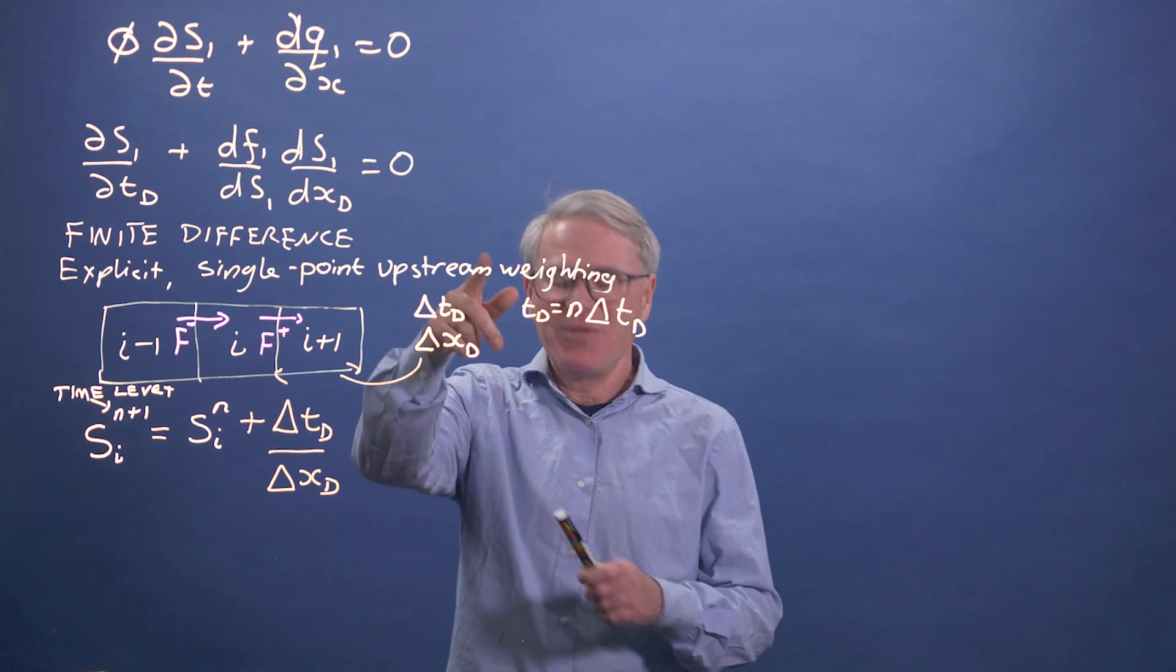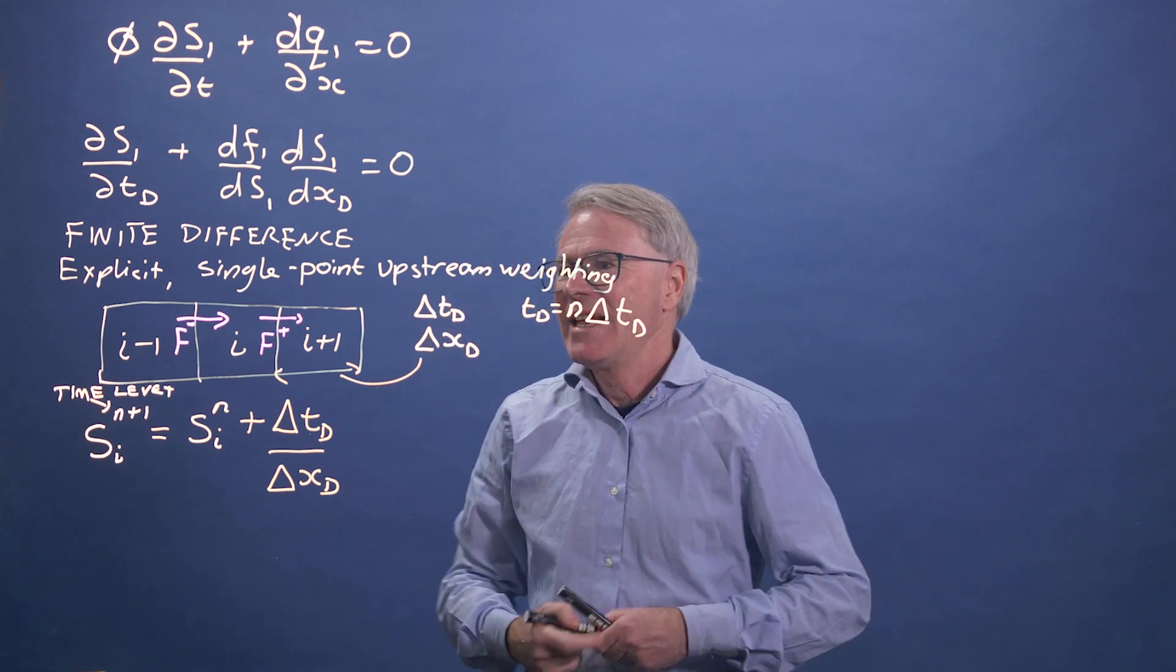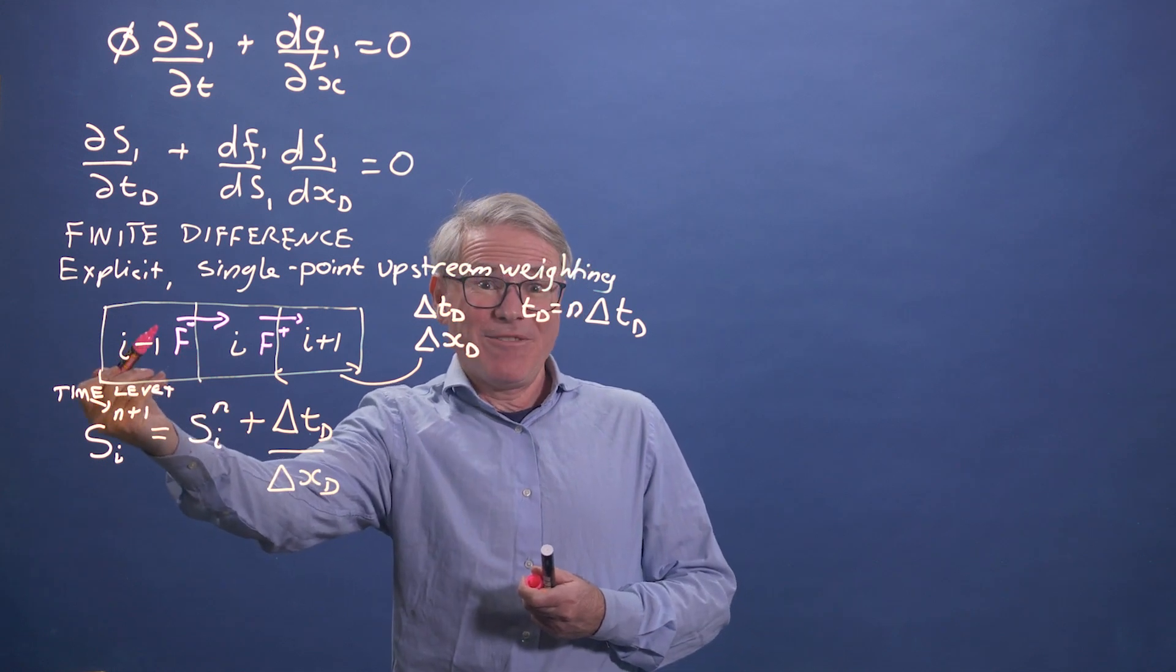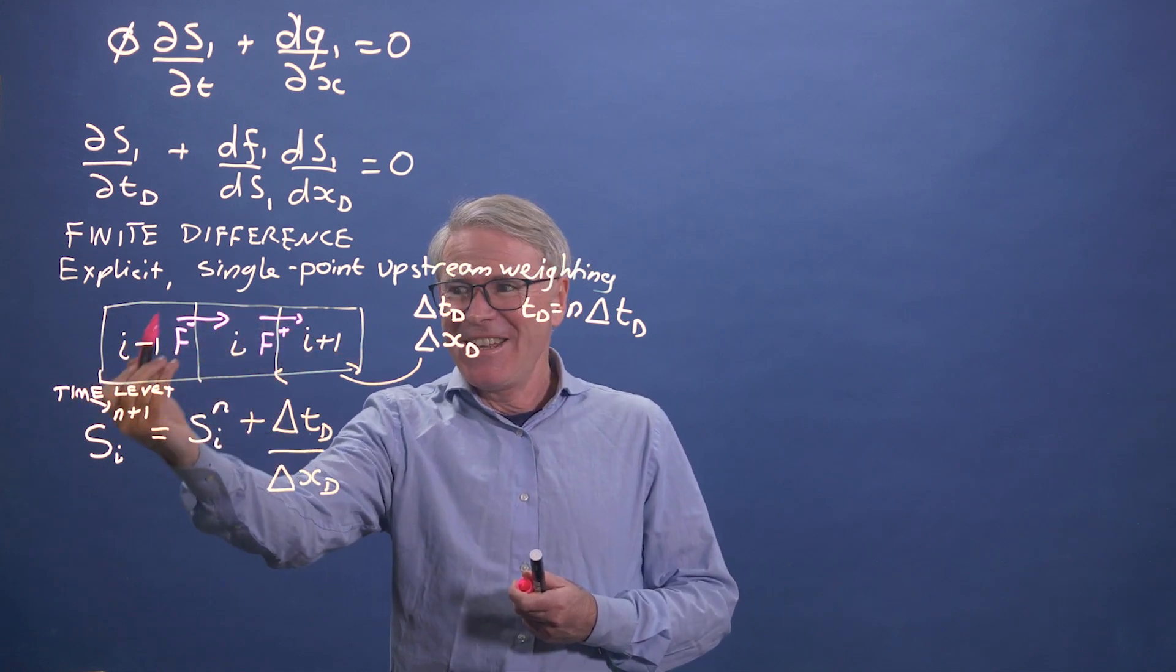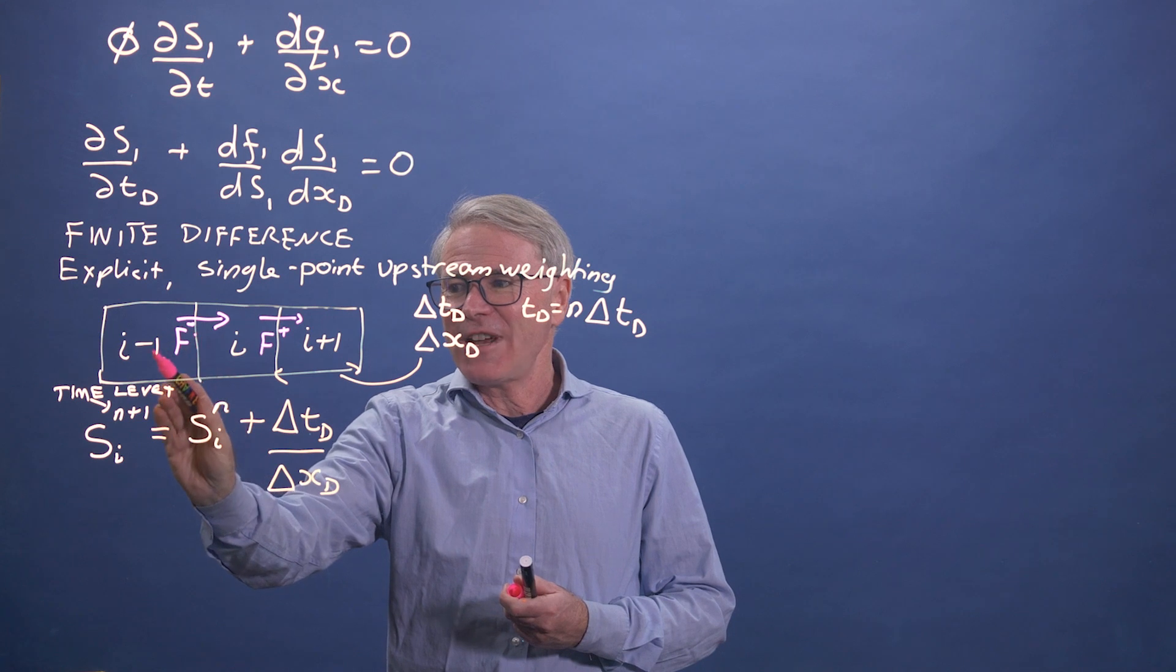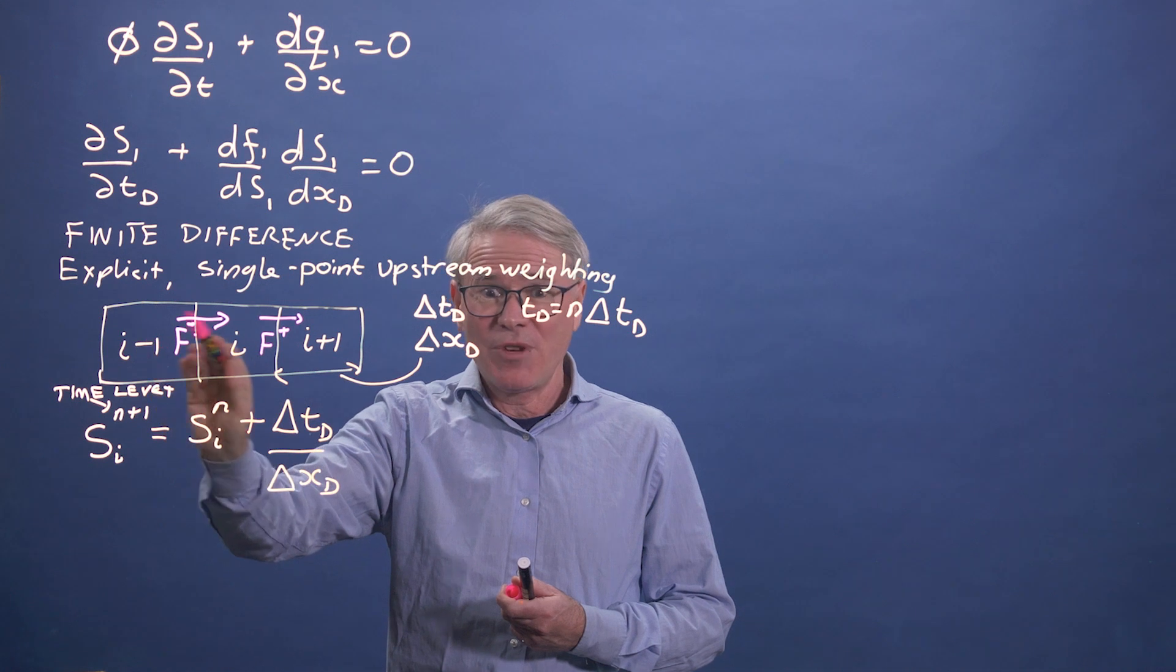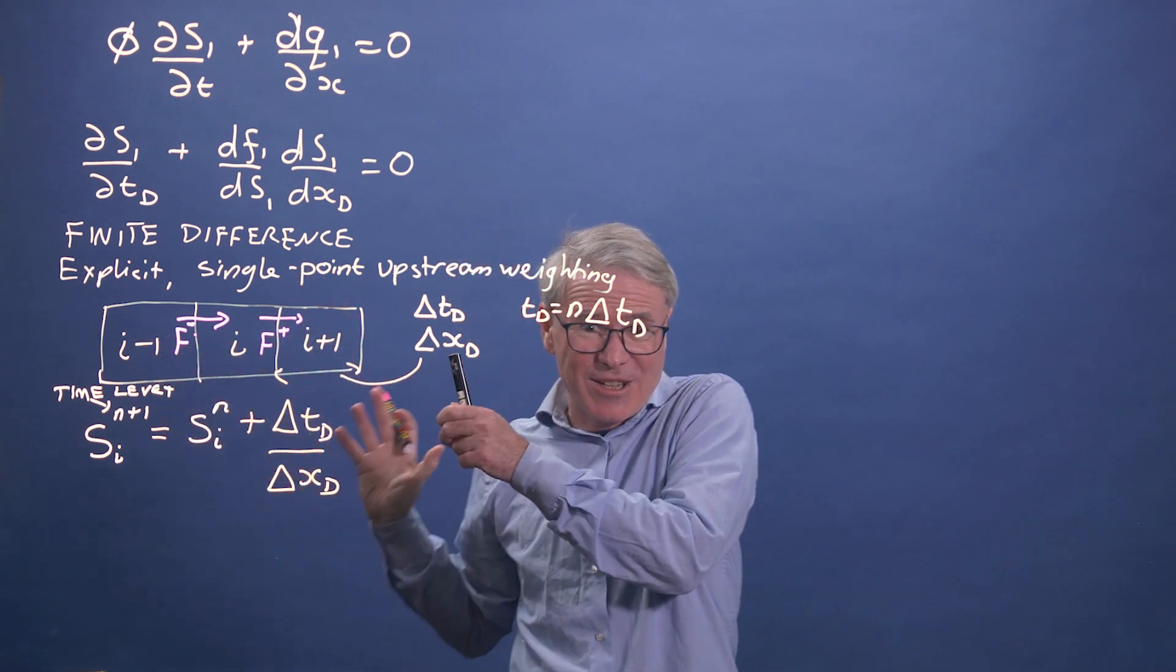we have a flux in minus a flux out. And what we're going to assume, and this is single point upstream weighting, is that the flux that goes in because we're flowing from left to right, the flux that goes in is the fractional flow evaluated at the saturation in the upstream grid block.